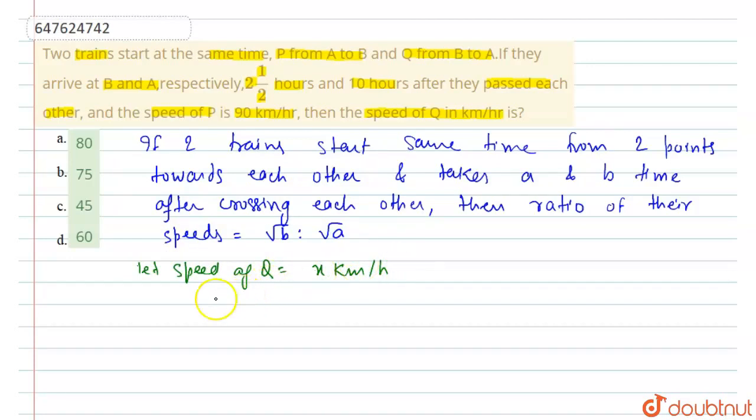We have P's speed given. So, ratio of speeds of P and Q is equal to 90 by x and this is also equal to,